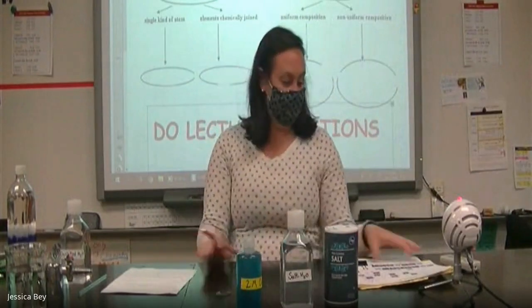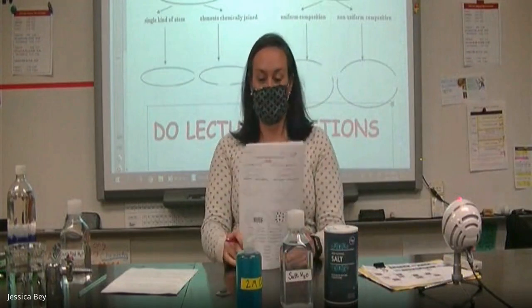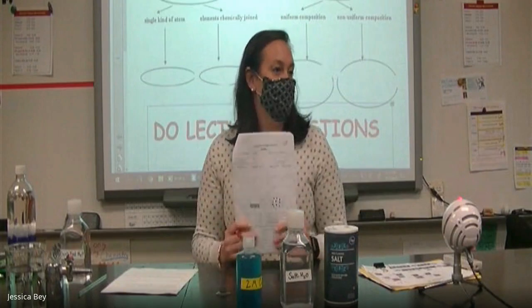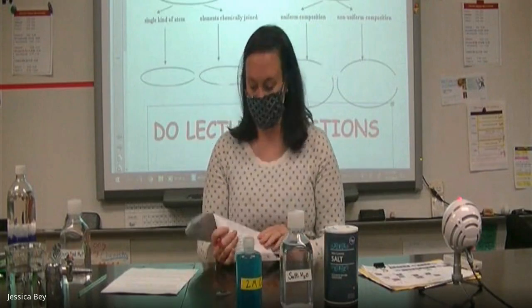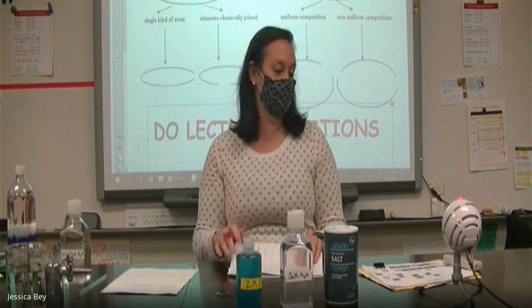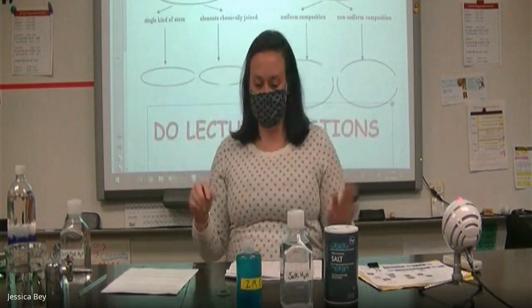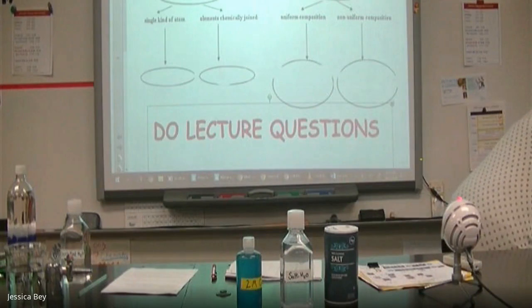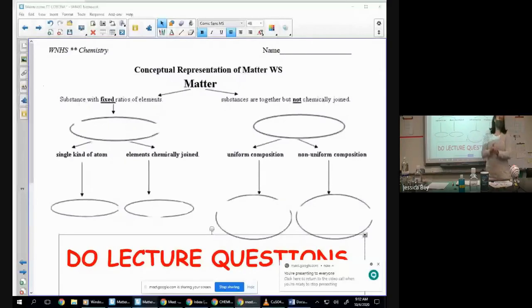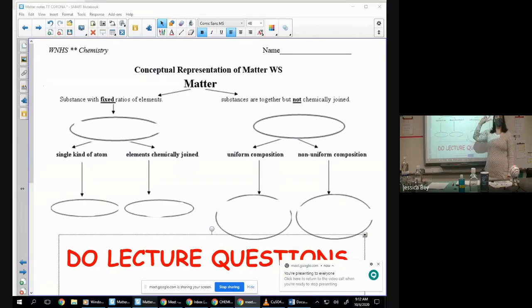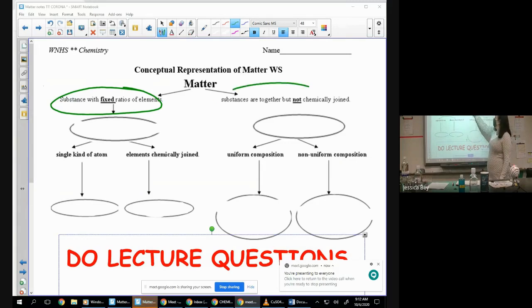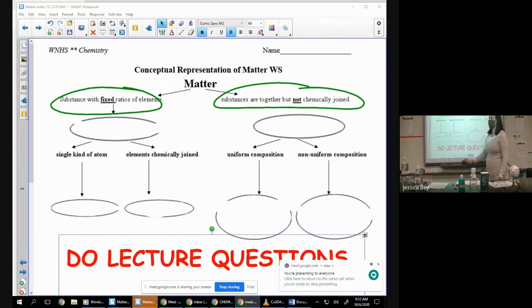We are going to find your packet. We're in the next page over, it looks like this with a little concept map on it. We're just going to refresh what we did yesterday very quickly. Remember yesterday we talked about how there were two main branches of matter. There were substances with fixed ratio of elements, that means all the same thing or two or more chemically joined together, and then we had things that were put together but not chemically joined.